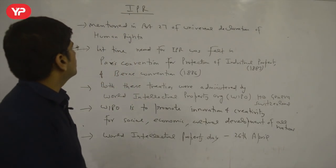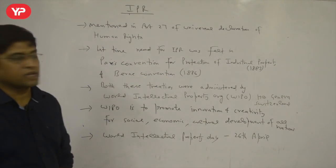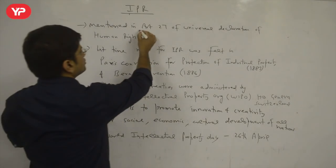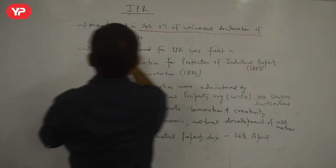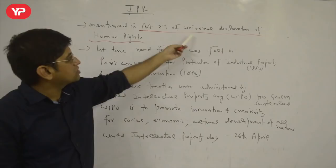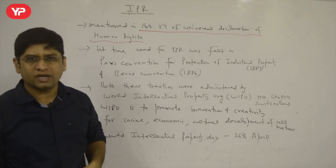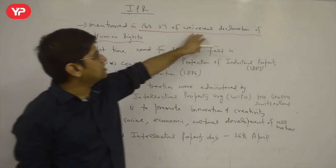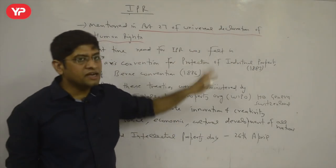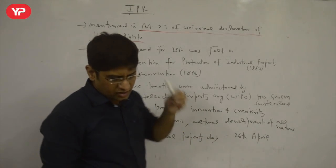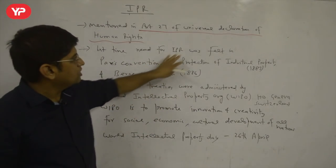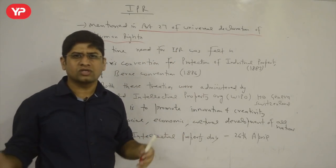More important points about IPR: legally, intellectual property rights are mentioned under Article 27 of the Universal Declaration of Human Rights. Note — this is not any article of the Indian Constitution; this is the Universal Declaration of Human Rights. So somewhere it is related to human rights. Under Article 27 of UDHR, IPR is mentioned, and that question can sometimes be asked.